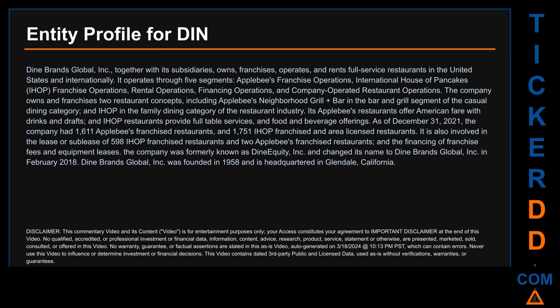The company owns and franchises two restaurant concepts: Applebee's Neighborhood Grill & Bar in the casual dining category, and IHOP in the family dining category. As of December 31st, 2021, the company had 1,611 Applebee's franchised restaurants and 1,751 IHOP franchised and area-licensed restaurants. The company was formerly known as DineEquity Inc and changed its name to Dine Brands Global Inc in February 2018. It was founded in 1958 and is headquartered in Glendale, California.